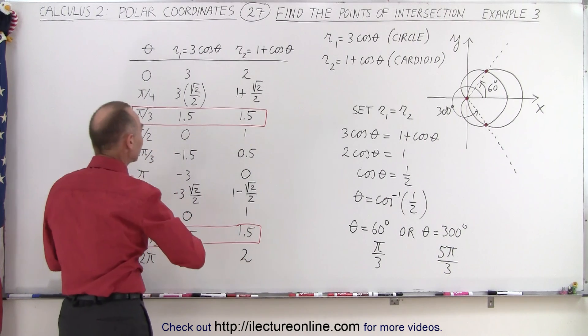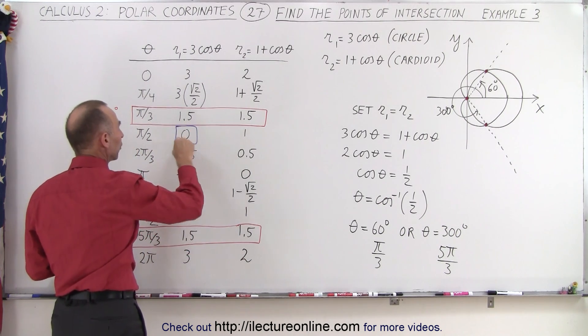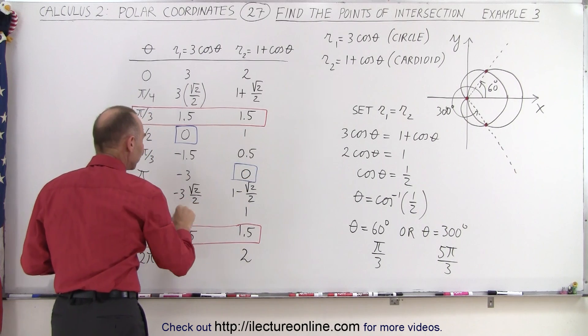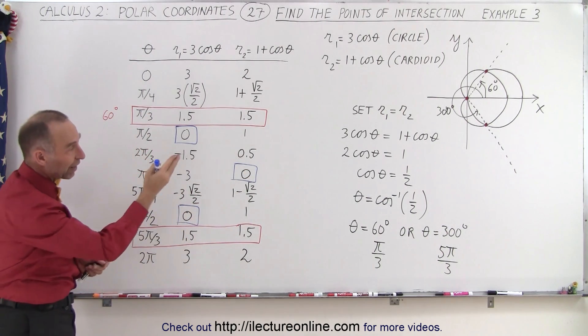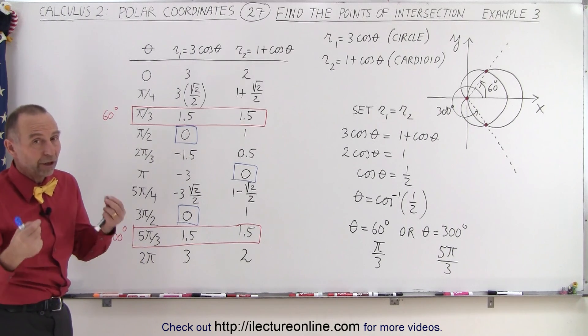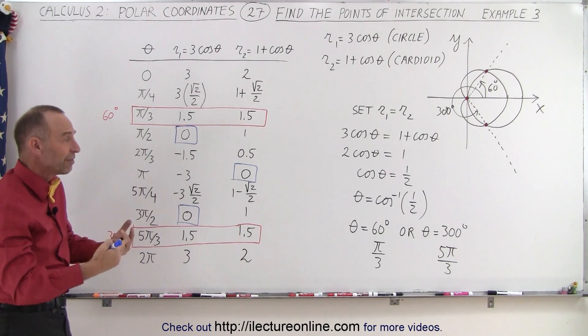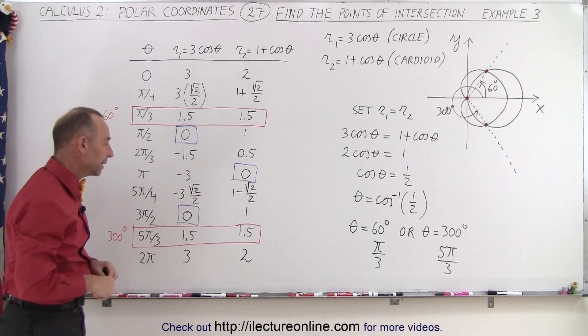But the value of the function being equal to zero occurs for both functions, but not for the same angle. And since it doesn't happen for the same angle, you cannot find it using that technique, because a single angle should be able to find the same value for both functions, which will not be the case here.